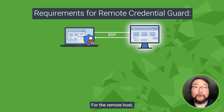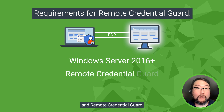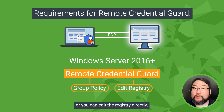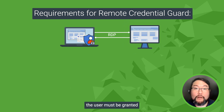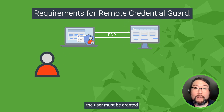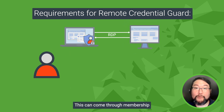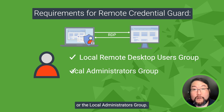For the remote host, it must be running Windows Server 2016 or later, and Remote Credential Guard needs to be enabled by either using Group Policy or you can edit the registry directly. Also, the user must be granted RDP access to the remote host. This can come through membership in the local remote desktop users group or the local administrators group.